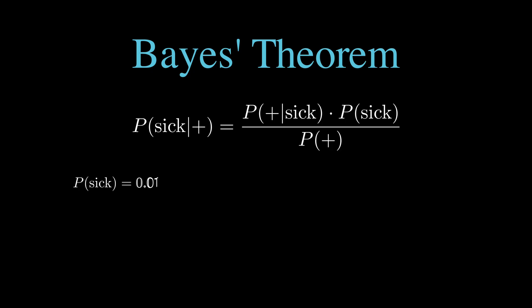First, we have P(sick), which is our prior probability, or base rate, that's the 1%, or 0.01, we started with. This is what we knew before any testing, just the general rate of the disease in the population. Next, we have P(+|sick), which is the likelihood, the test's accuracy for sick people, and that's 99%, or 0.99.